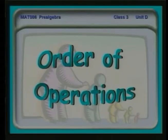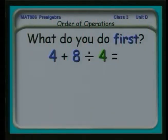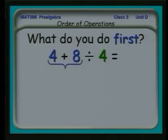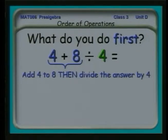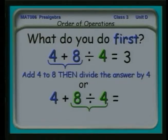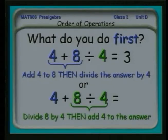Let's look now at the order of operations. We'll start by reviewing. Which of these operations do you do first, the plus or the division: 4 plus 8 divided by 4? If we take 4 plus 8 first and then divide that answer by 4, we get 3 — 12 divided by 4 is 3. On the other hand, if we take 8 divided by 4, which is 2, then the answer is 6. So which do we do? Where do we group the operations?